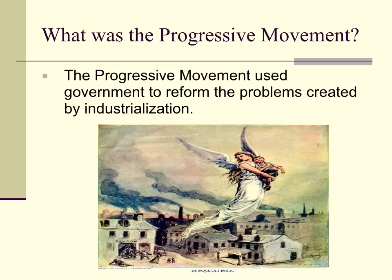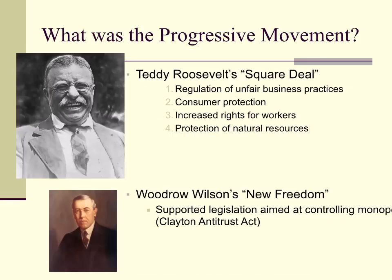What was the progressive movement? The progressive movement used government to reform the problems created by industrialization. Teddy Roosevelt had the Square Deal, which had four parts: first, regulation of unfair business practices — those monopolies and such; second, consumer protection — protect the buyer; third, increased rights for workers, hopefully getting rid of long hours and dangerous conditions; and fourth, protection of natural resources.